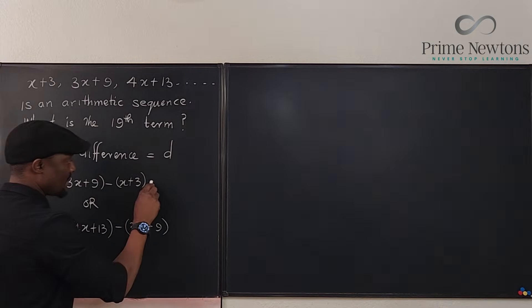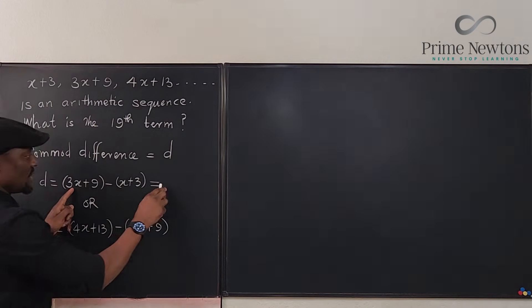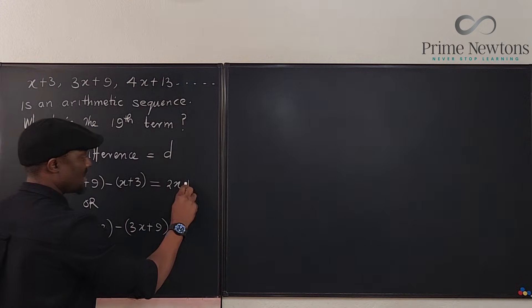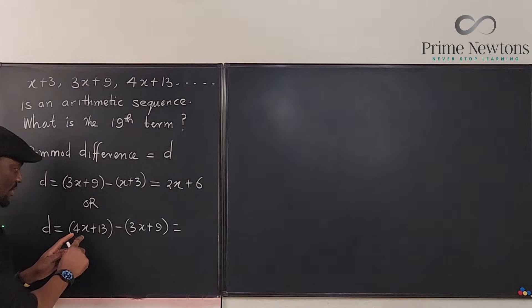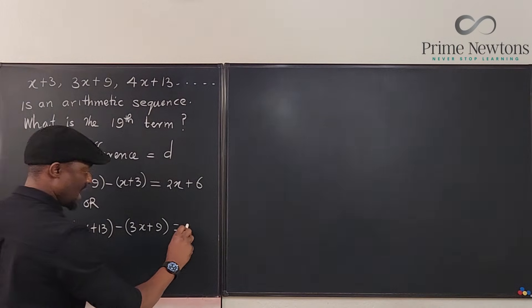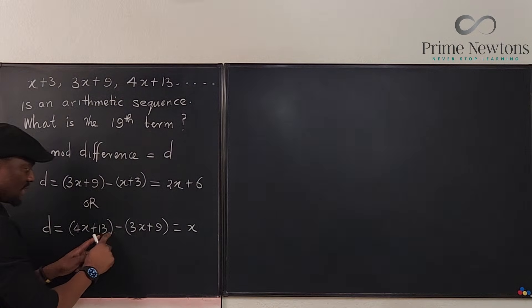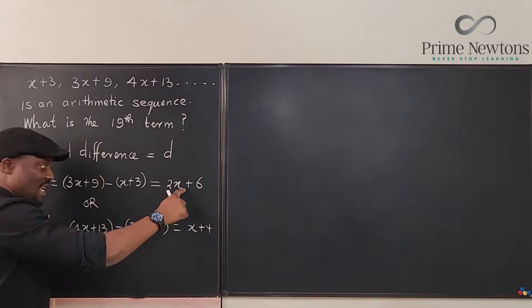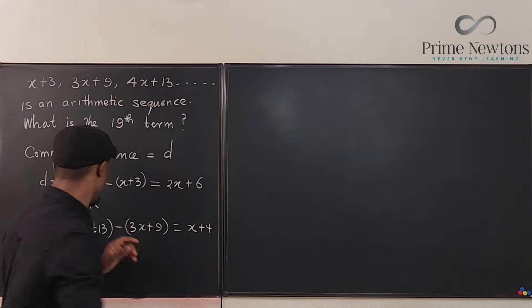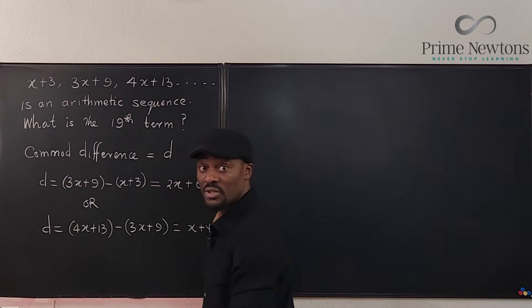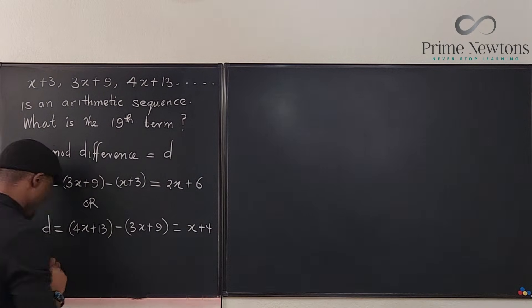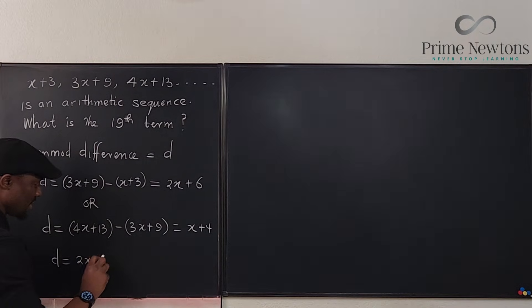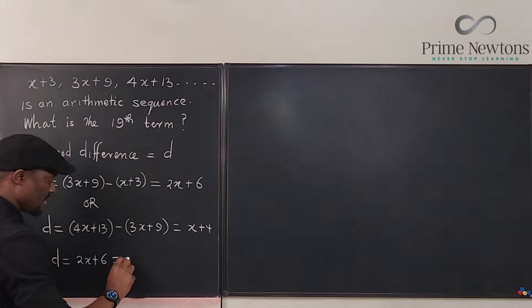This is going to give us 3x minus x which is 2x, and we have 9 minus 3 which is plus 6. Okay, let's see what this gives us. It's going to be 4x minus 3x, that's x, and then we're going to have 13 minus 9 is going to be plus 4. So this and this are exactly the same thing because they both give us the expressions for d. So we can easily say that d is equal to 2x plus 6 and it's also equals to x plus 4.